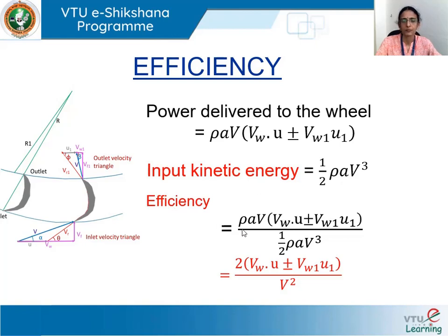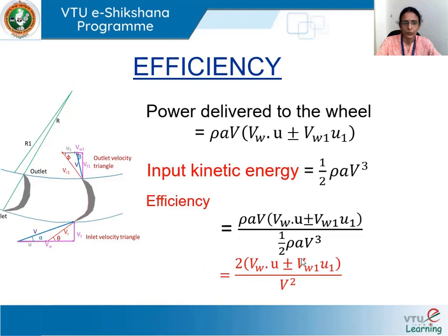Therefore, the expression for efficiency is: output power ρAV·(Vw·U ± Vw1·U1) divided by the input kinetic energy ½ρAV³. Cancelling the common terms, this simplifies to: η = 2(Vw·U ± Vw1·U1) / V².